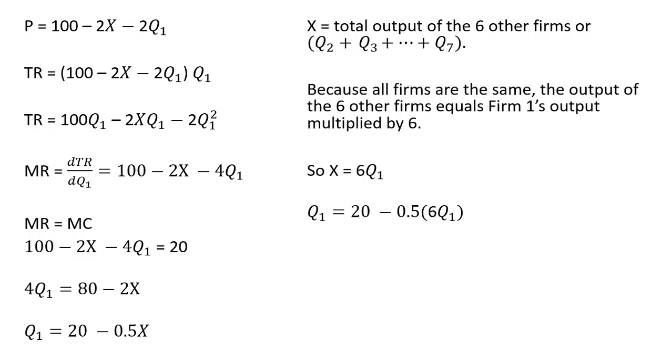I'm going to make a substitution where I have an X over here. I'm going to plug in 6 times the output of firm 1. And now we're going to just solve this for Q subscript 1. So 0.5 times 6 gives us this 3 over here. Adding 3Q subscript 1 to both sides. And then dividing by 4. 20 divided by 4. Firm 1 will produce 5 units of output.